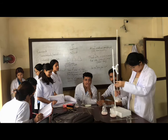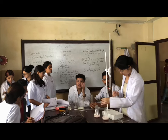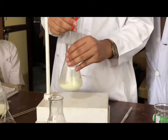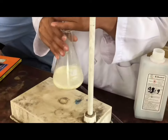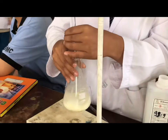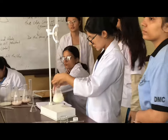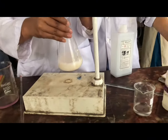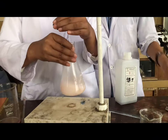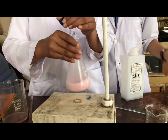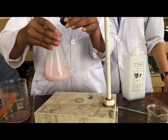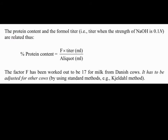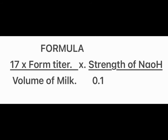The protein consumed depends on how much protein acts as acid. Finally, the volume of NaOH consumption is identified and I calculate the formula to determine the protein content.